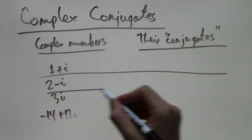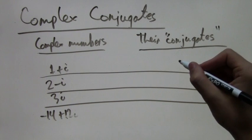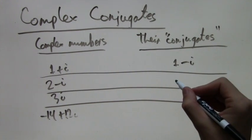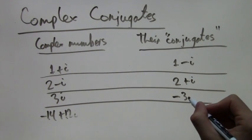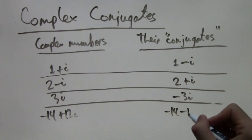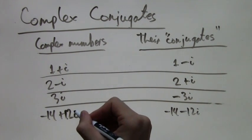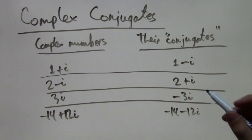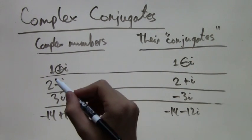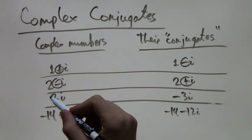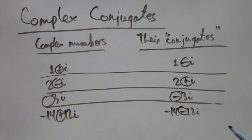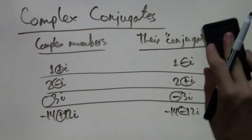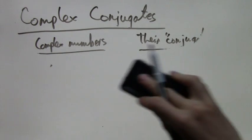For 1 plus i, the conjugate is 1 minus i. For 2 minus i, it's 2 plus i. For 3i it's negative 3i, and for negative 14 plus 12i it's negative 14 minus 12i. What we've done is flipped the sign of the imaginary part — where we had a plus we put a minus, and where we had a minus we put a plus. That is what we call the complex conjugate of a number.